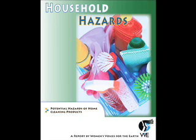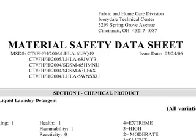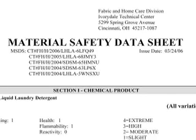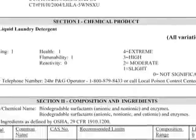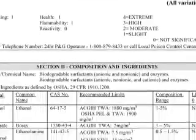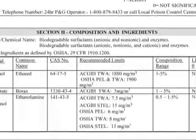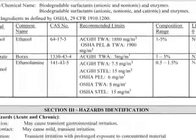In our report, Household Hazards, we looked at the material safety data sheets provided by manufacturers for hundreds of products. These data sheets, called MSDSs, are required if certain hazardous chemicals are present in a product.